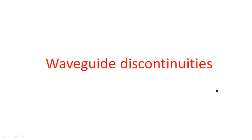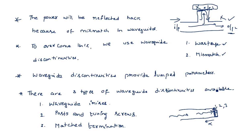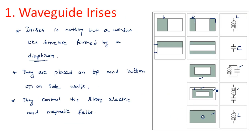In the last video, we started waveguide discontinuities. We saw what waveguide discontinuities mean, what their purpose is, and what the different types are. The different types of waveguide discontinuities include irises, posts and tuning screws, and match termination. Waveguide irises are a window-like structure formed by a diaphragm, created on either walls or top and bottom or anywhere inside the waveguide.